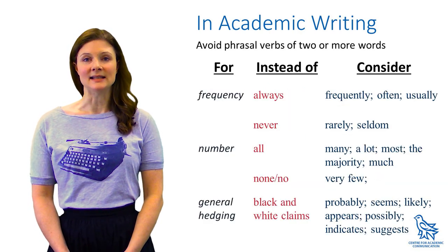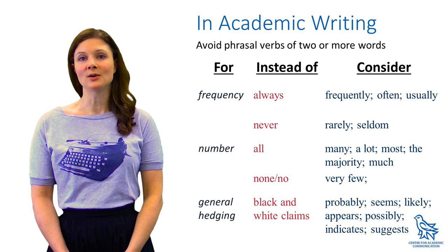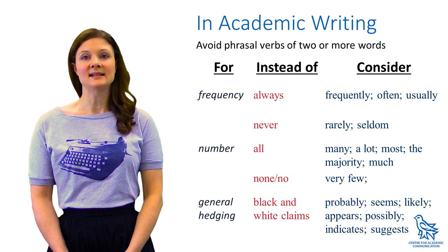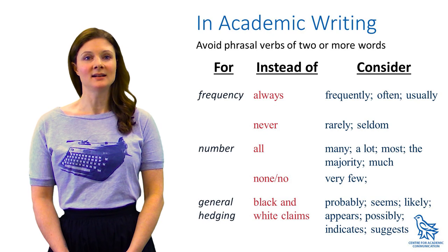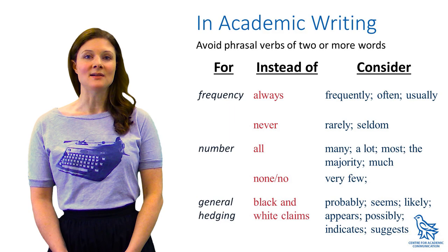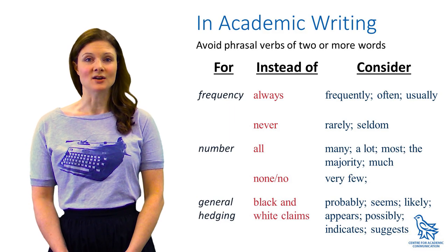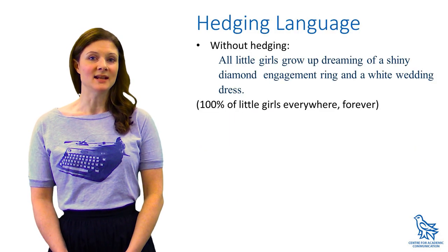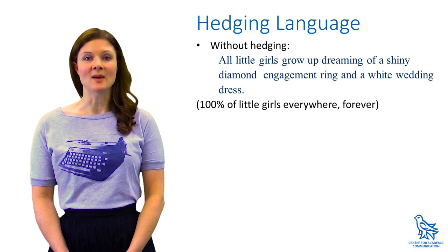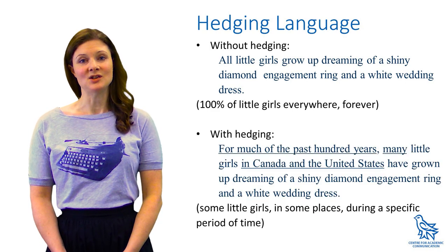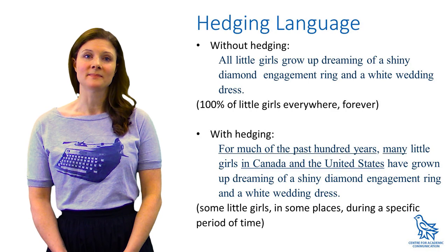There's language for frequency, like "often" or "rarely," for number, like "most" or "few," verbs like "seem" and "could," and modal adverbs and adjectives like "possible" or "clearly." Hedging language allows you to be cautious in your claims and therefore more credible. In the sample sentence without hedging, some readers might want to argue with you, but in the revised sentence with hedging, more readers would probably agree.